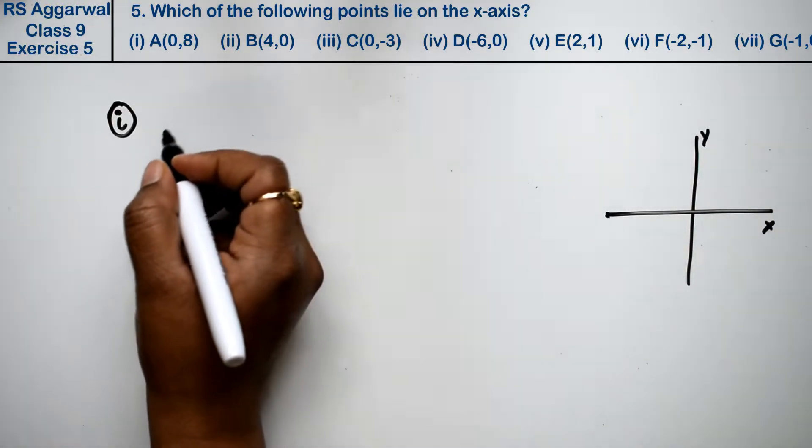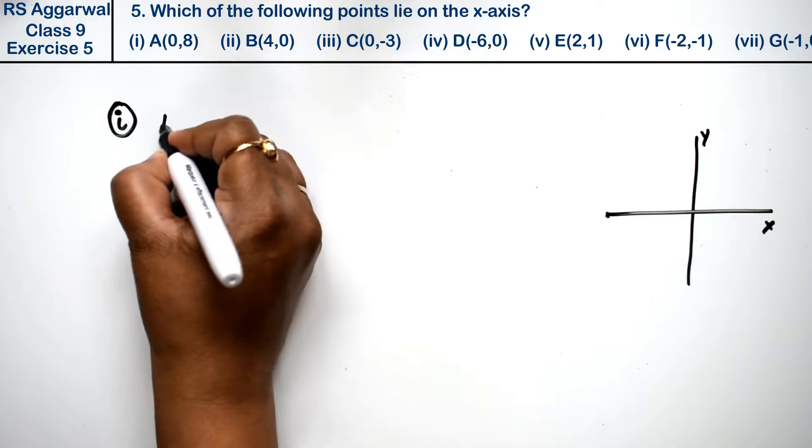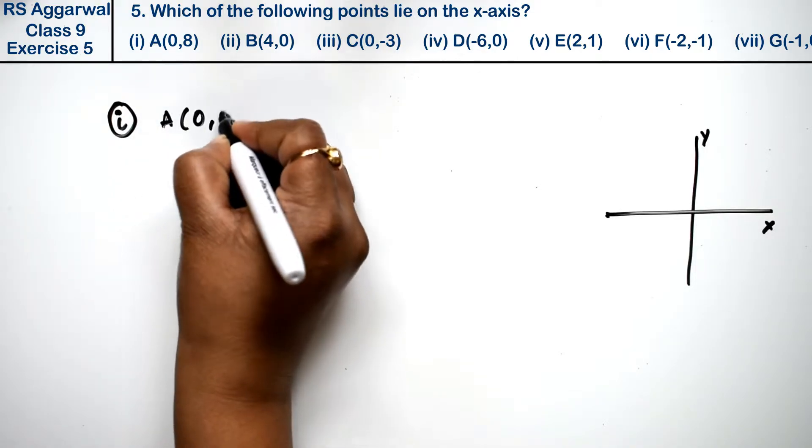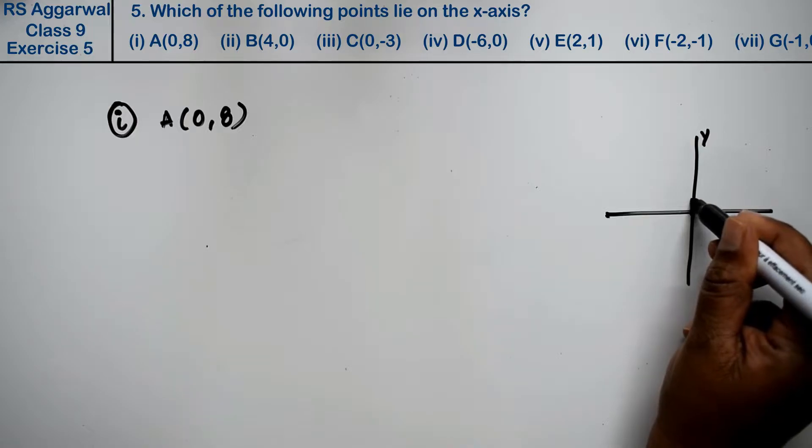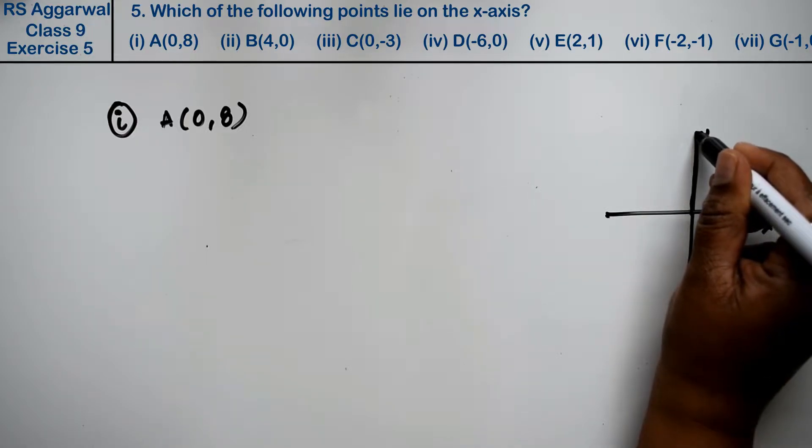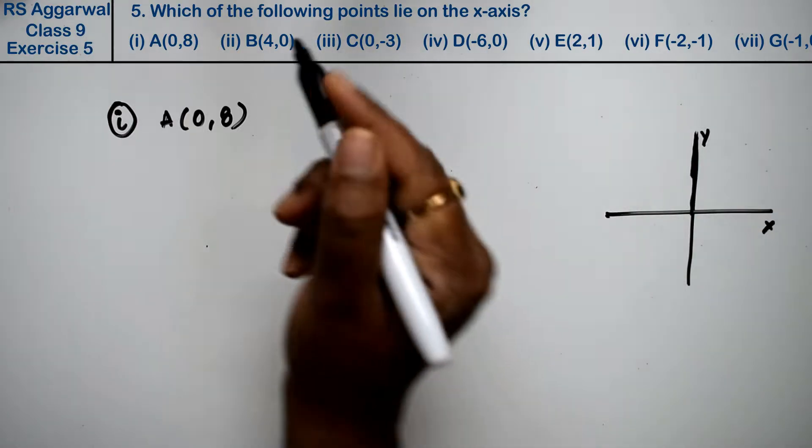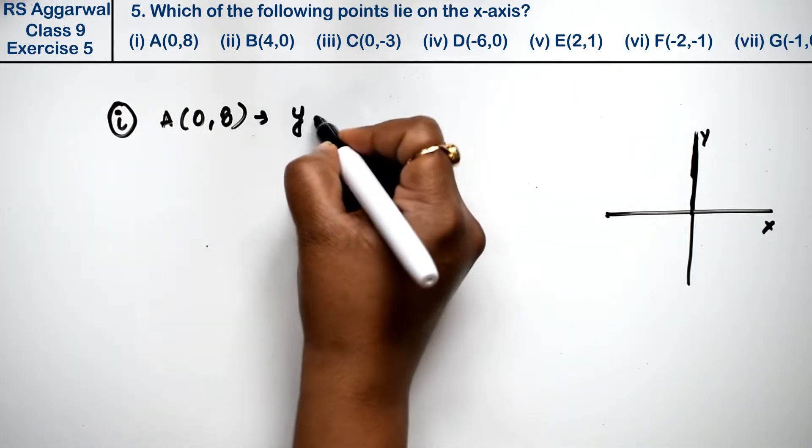Now the first point is A, that is (0,8). So x is 0 and y is 8. So it went up to the top. So which axis is this? The y-axis. So it will lie on the y-axis. So it will not lie on the x-axis.